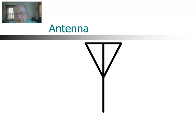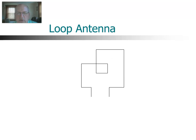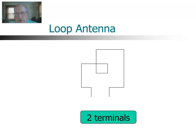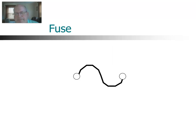An antenna looks like this — there are a number of different kinds. This antenna has one terminal. A loop antenna has two terminals. Those are a couple of the more basic antennas. Here is a fuse. The symbol should look like an S shape — a continuous, nice smooth curve. It might look like line segments due to the drawing program, but it should be a smooth curve. A fuse is an overcurrent device: if you pass too much current through it, the element will melt and open the circuit.